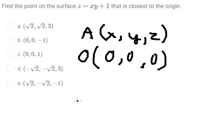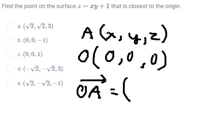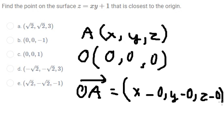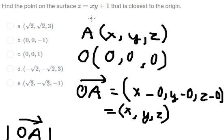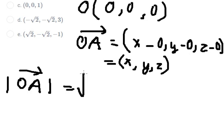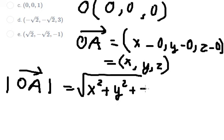Now we need to find the vector of A. That is about x minus 0, y minus 0, and z minus 0. So we simply find that is about x, y, z. So we need to find the magnitude of vector A, and this one is the distance from one point on the surface to the origin. So that should be about the square root of x squared plus y squared plus z squared.